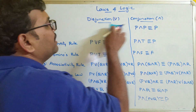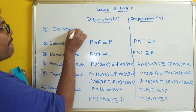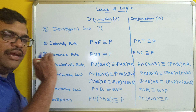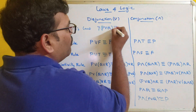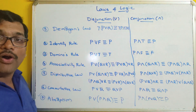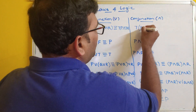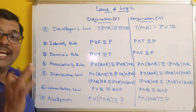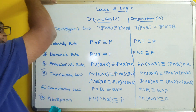The eighth law is De Morgan's law. Applying negation to a disjunction: ¬(p∨q) ≡ ¬p∧¬q. Similarly, applying negation to a conjunction: ¬(p∧q) ≡ ¬p∨¬q. This kind of logical equivalence is called De Morgan's law.